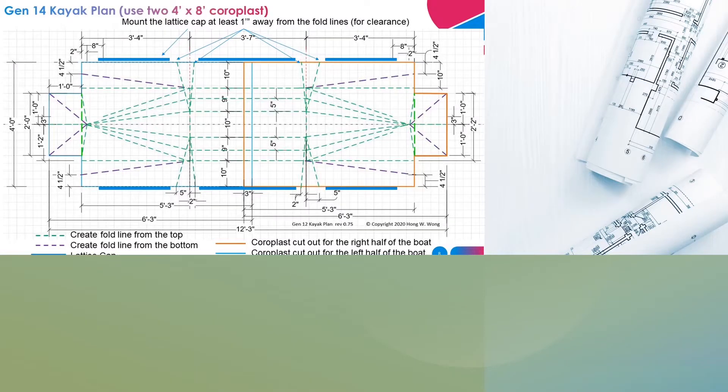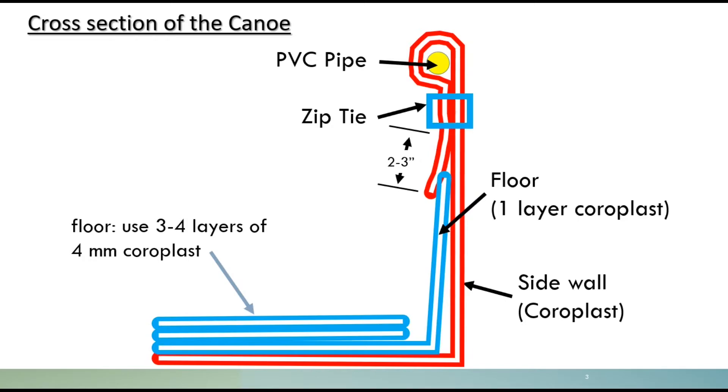In part two, I'm going to talk about the floor design and also the bow plan. This is the cross section of the canoe, which looks very similar to the Gen 14 kayak.